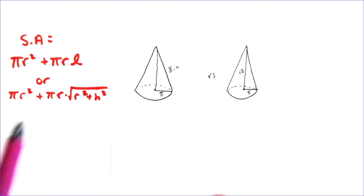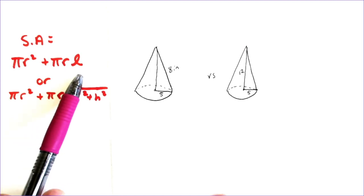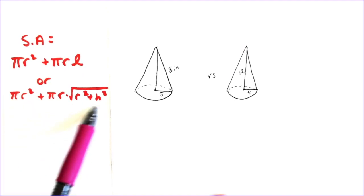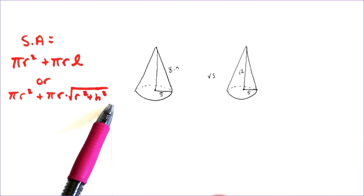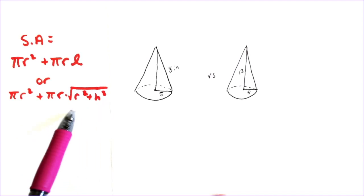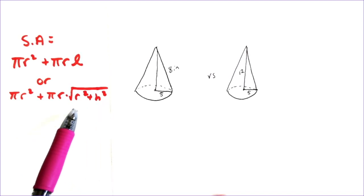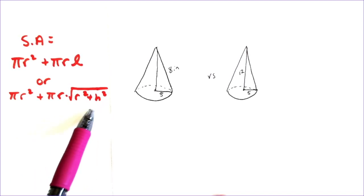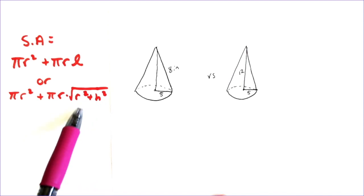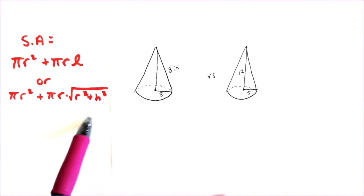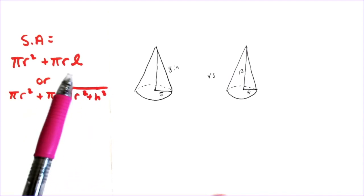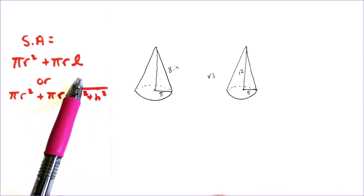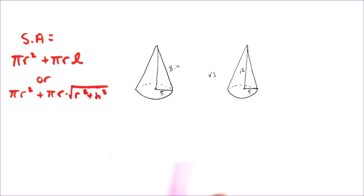If we're not given the slant height, then we have this bottom formula, which is virtually the same thing, but you notice it has the square root of r² + h². That is really just the Pythagorean theorem built into the formula to get us that slant height. So we're going to do two problems with cones and we're going to see how that looks.